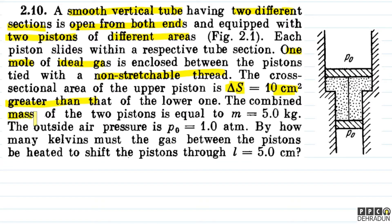The combined mass of the two pistons is M = 5 kg. The outside air pressure is P₀ = 1.80×10⁴ Pa. By how many kelvins must the gas between the pistons be heated to shift the pistons through L = 5 cm?